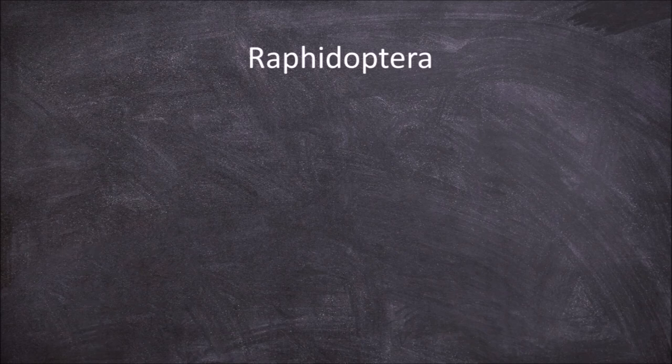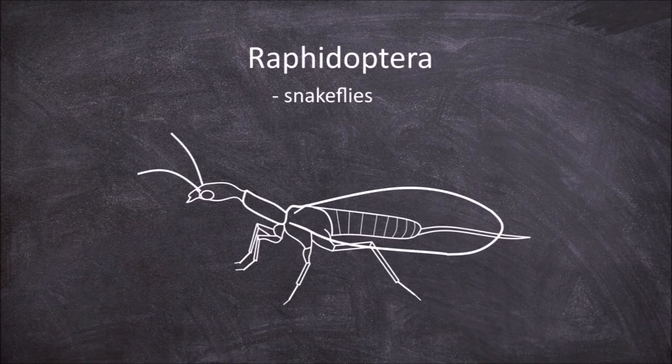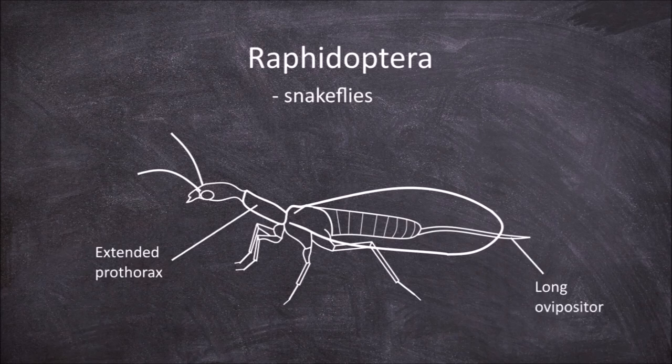The next order is the Raphidioptera, which are the snakeflies. Members of this order have an extended prothorax giving the appearance of a long neck, and in females they have long ovipositors. They also have two pairs of wings that are the same shape and size.